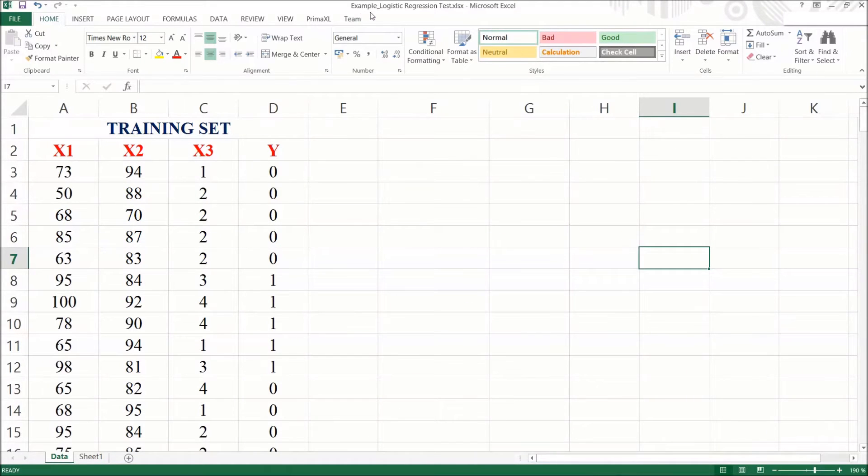We have the Excel file named example logistic regression test. This is the same data we had used in the previous two episodes on logistic regression. We have three independent variables x1, x2, and x3, and one dependent variable y. We have in mind the in-sample testing, so the same data set is used for training and testing.